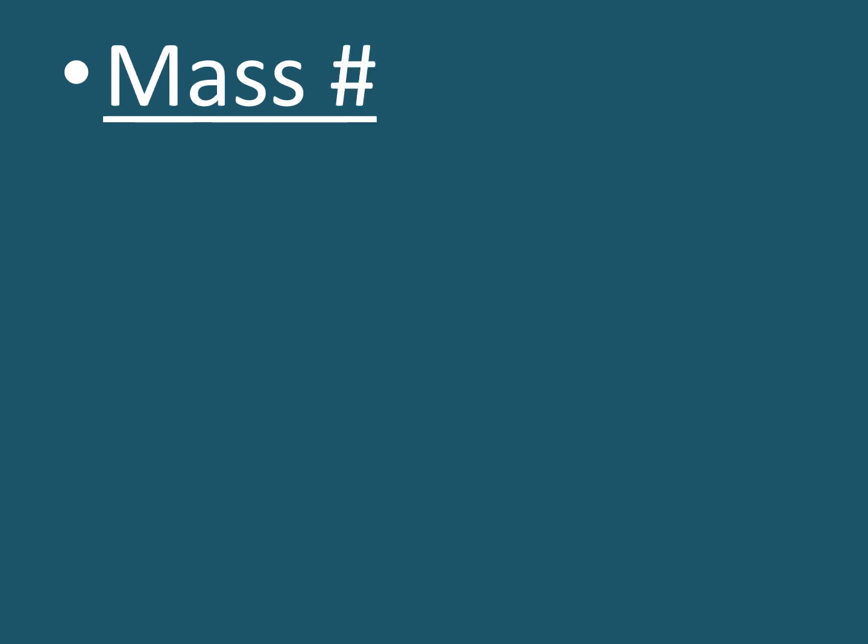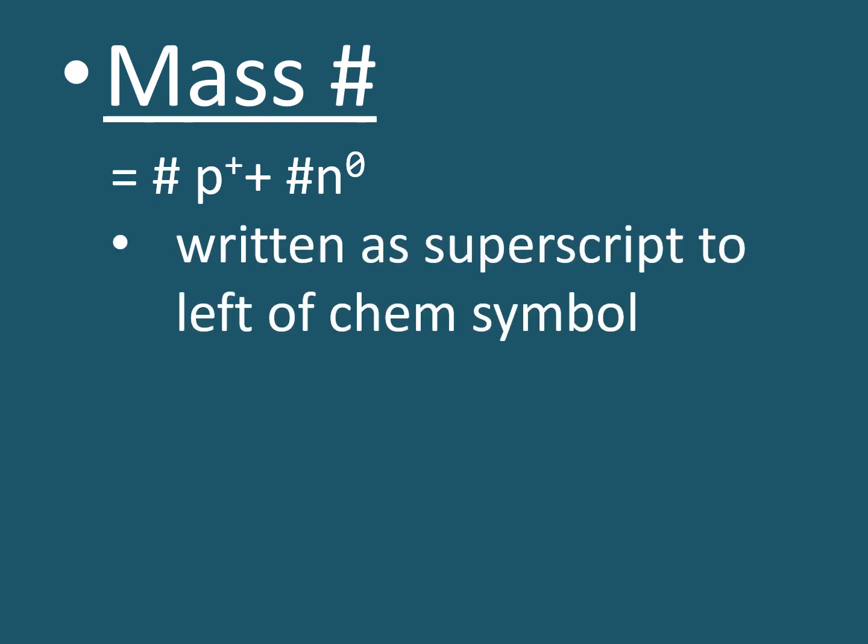Another characteristic to know about atoms is the mass number. The mass number of an atom is equal to the number of protons plus the number of neutrons that is found in the nucleus of an atom. The mass number is not indicated on the periodic table but is usually written separately as a superscript to the left of the chemical symbol. Here's an example of carbon. Carbon usually has six protons and six neutrons in its nucleus and so therefore its mass number would be 12.